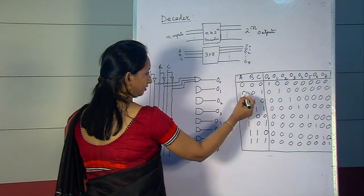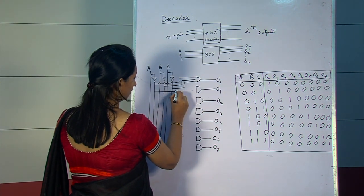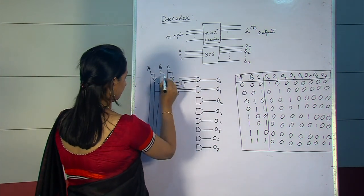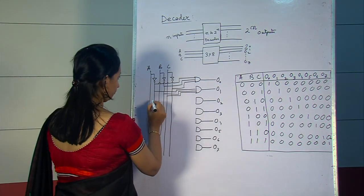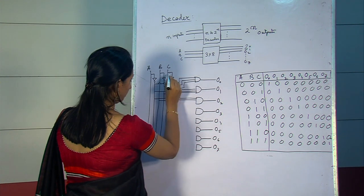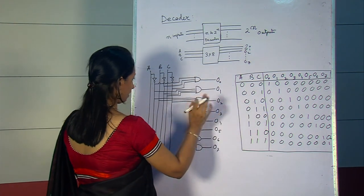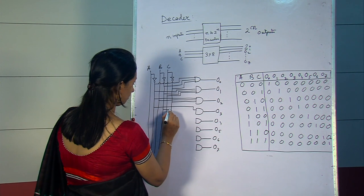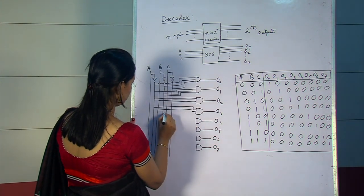For the second case, 0,0,1: A is 0, B is 0, and C is high, so this is the high line. For the third case, B is high and A and C are low. For the fourth case, B and C are high and A is low. So A is low, B is high, and C is high.